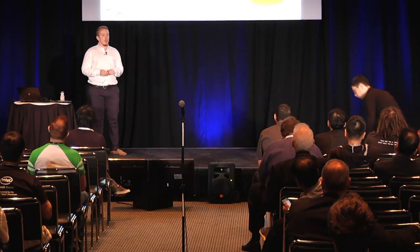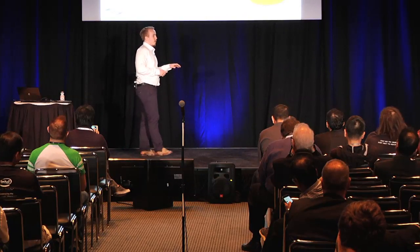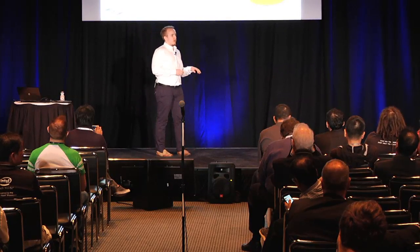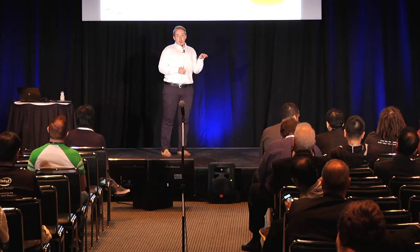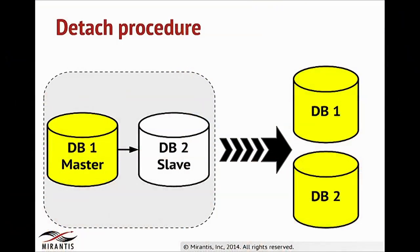The second use case is defined as: we need to be able to detach one of the instances from the replication set and mark it as a standalone server. When we have a replication set, we are able to perform this operation, and at the end we will have two standalone servers.